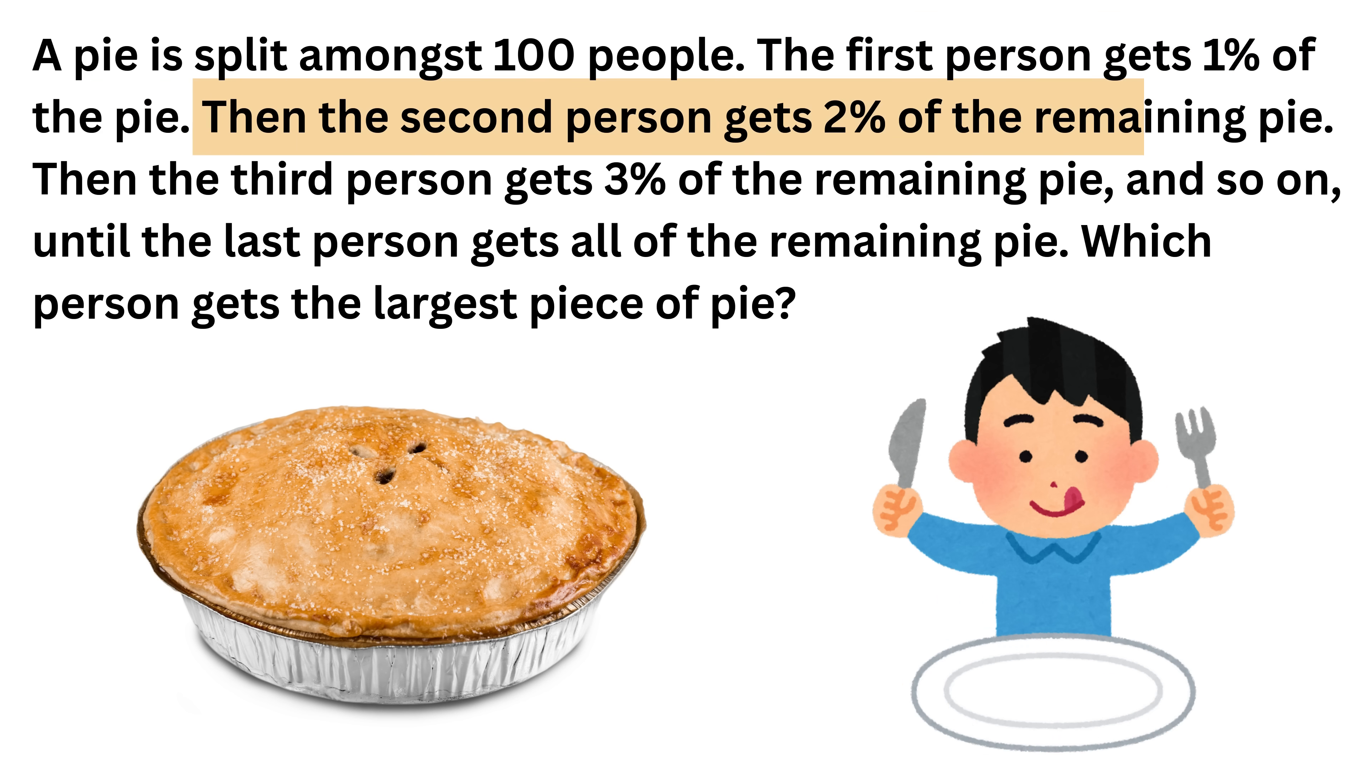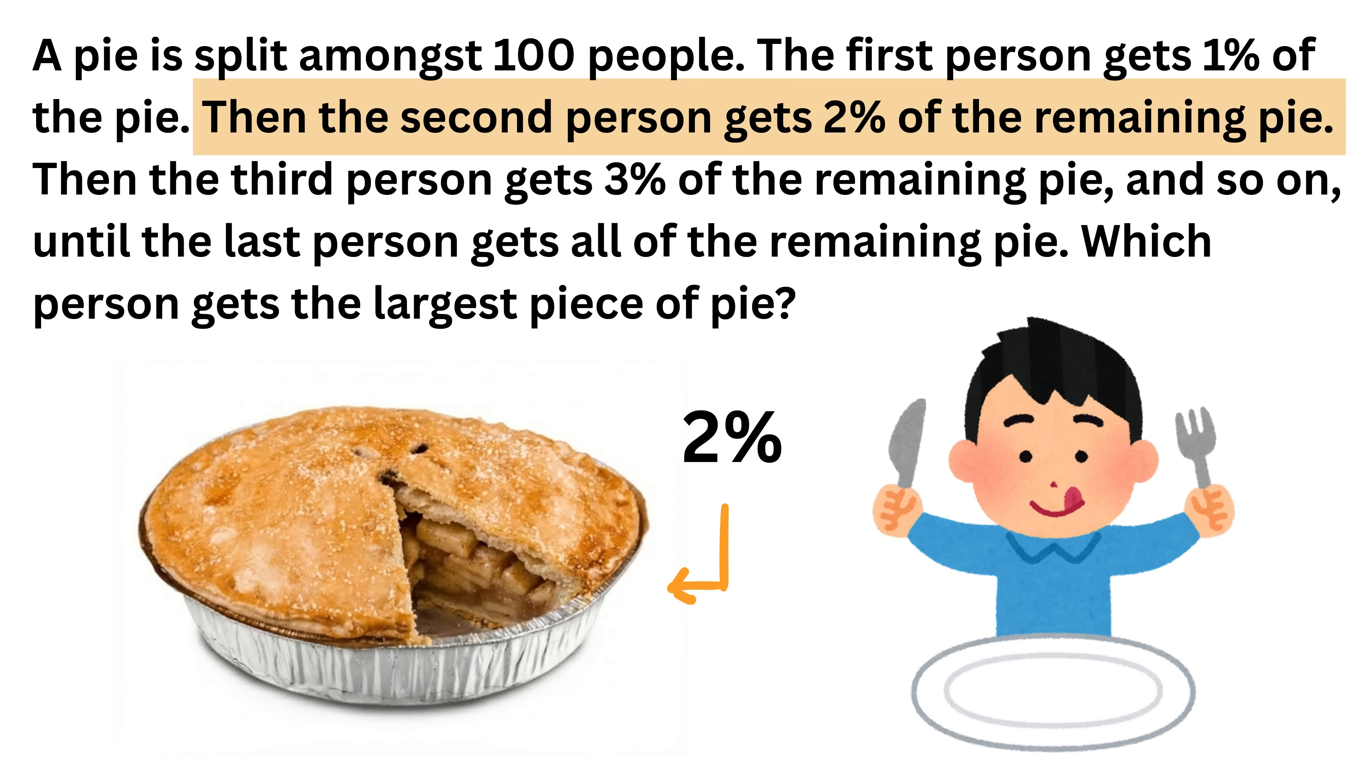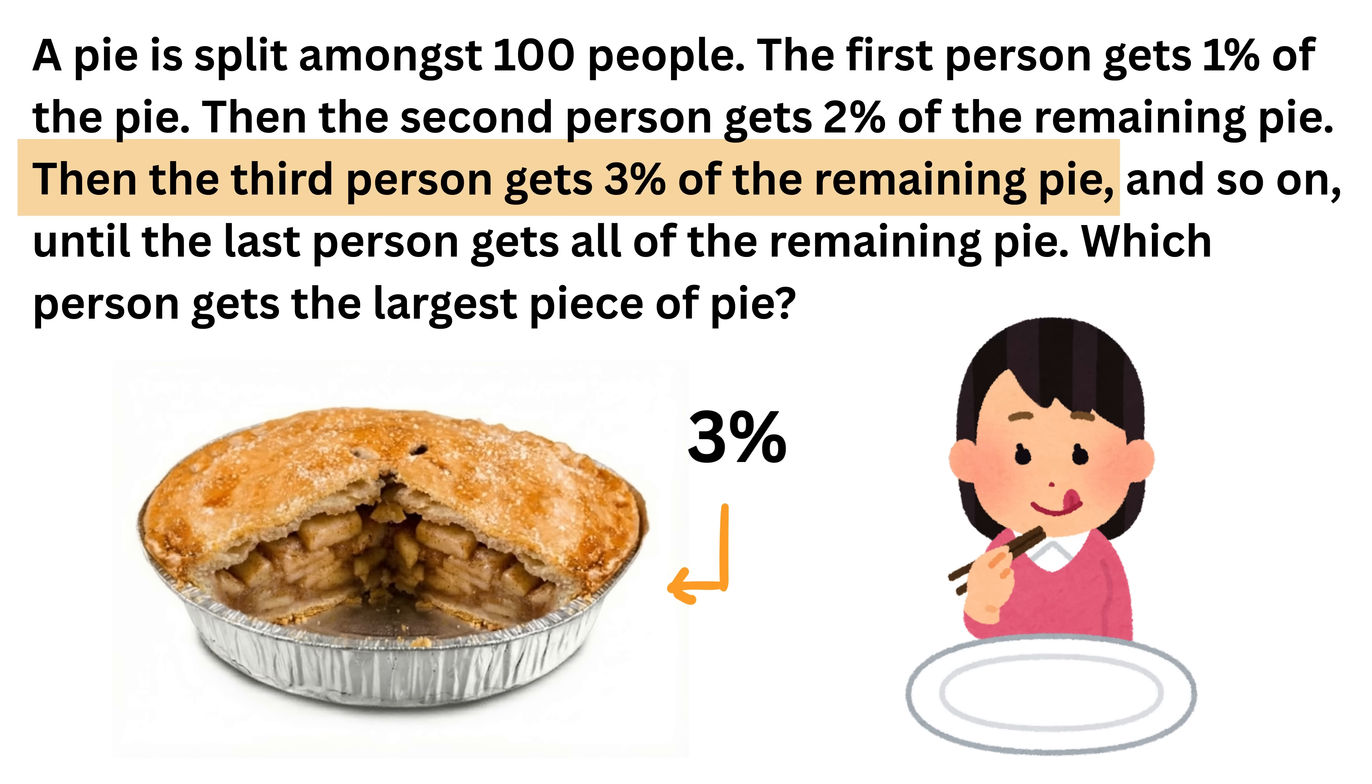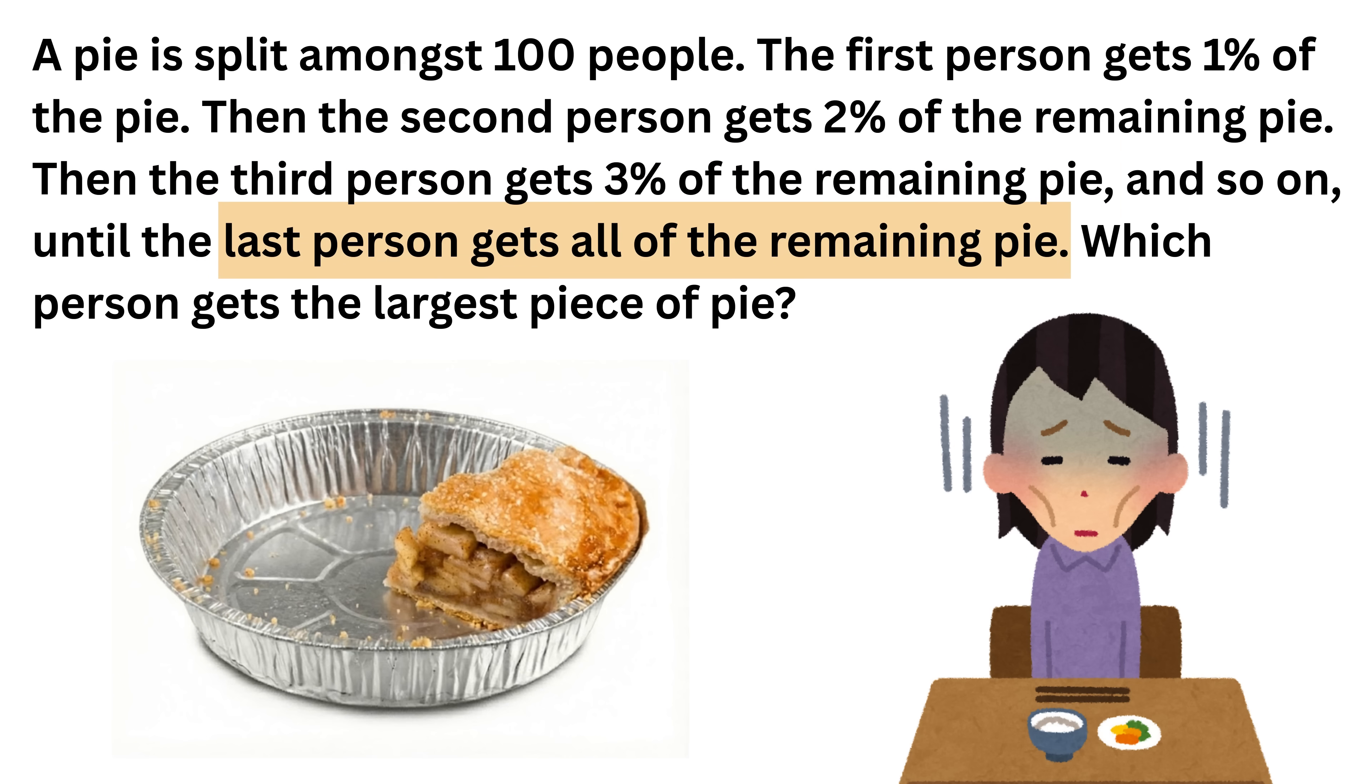After this, the second person steps forward and takes 2%, but not of the whole pie, instead only of the pie that is still left. Then the third person takes 3% of whatever remains after person two. This continues all the way until the 100th person, who takes 100% or all of whatever tiny bit is still there.